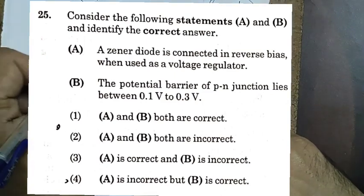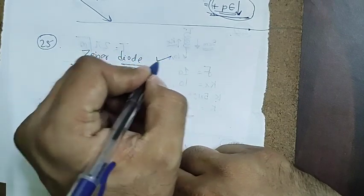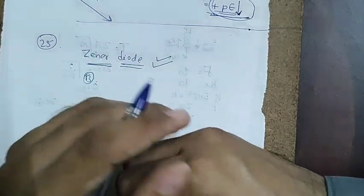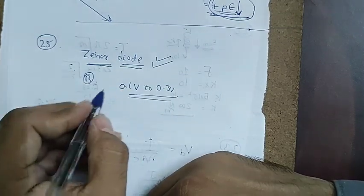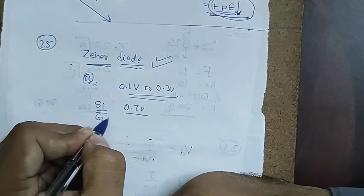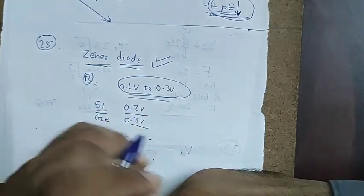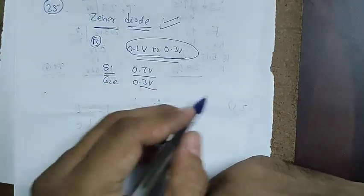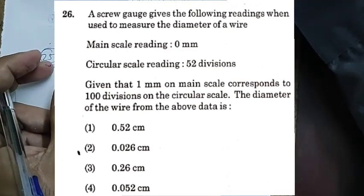Question 25 has two statements. Statement A: Zener diode is used as a voltage regulator in reverse bias — correct. Statement B: barrier potential of a p-n junction lies between 0.1 V and 0.3 V — incorrect (silicon is 0.7 V, germanium is 0.3 V). So A is true, B is false — option 3.